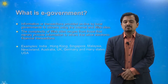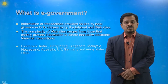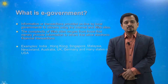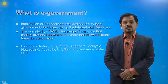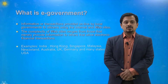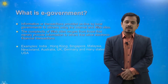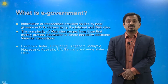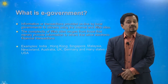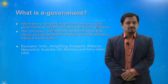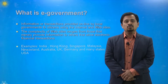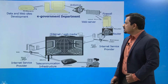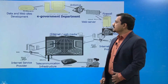For example, China, India, Hong Kong, Singapore, Malaysia, New Zealand, Australia, UK, Germany, and many states of the USA have successfully implemented e-government. Now we can see how e-government is working.